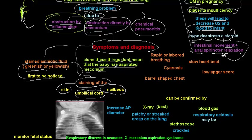However, stained amniotic fluid and stained skin, umbilical cord, and nail beds alone do not confirm that the baby has aspirated meconium. We need to see symptoms in the newborn, such as rapid or labored breathing — the baby is struggling to take a breath.